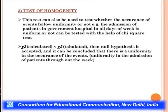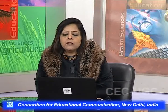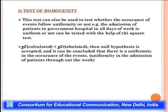The test of homogeneity tests whether the occurrence of events follows uniformity. For example, we test whether admission of patients in government hospitals is uniform across all days of the week — Monday to Sunday. If χ²(calculated) < χ²(tabulated), the null hypothesis is accepted and we conclude there is uniformity in the occurrence of events — uniformity in patient admissions throughout the week.